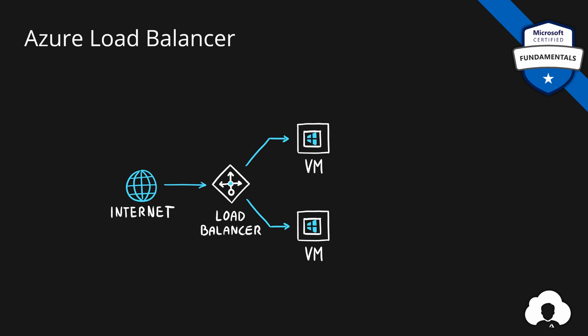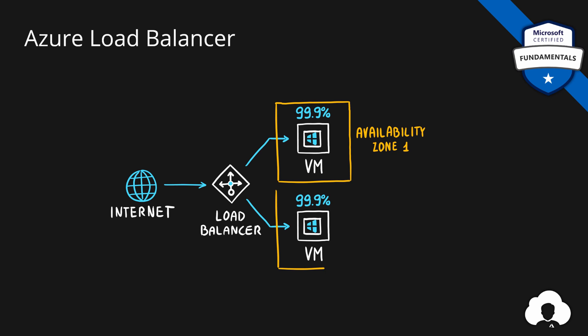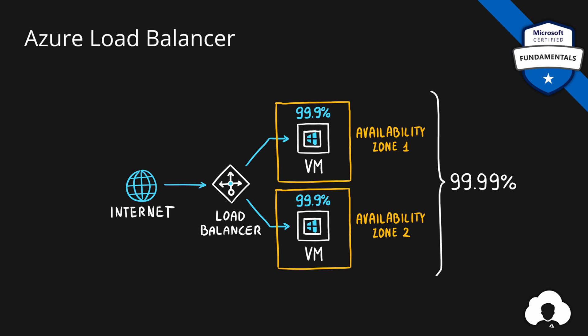The second reason is high availability. If those virtual machines are premium SSD virtual machines, by default from Microsoft you will get three nines of SLA — meaning each virtual machine is guaranteed to run 99.9% of the time. But if you put those virtual machines into separate availability zones and put a load balancer in front, Microsoft guarantees you four nines of SLA, increasing availability for your application by 10 times. The load balancer automatically checks the health of the components it's connected to, so if one virtual machine stops working, it will automatically redirect traffic to the second one.